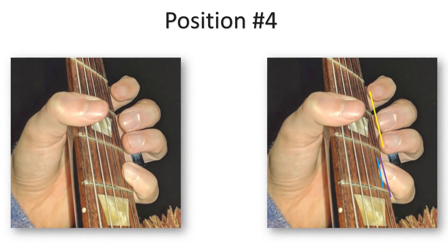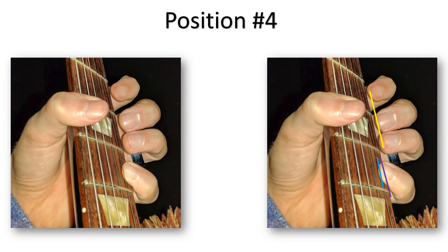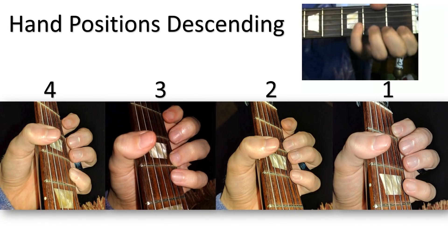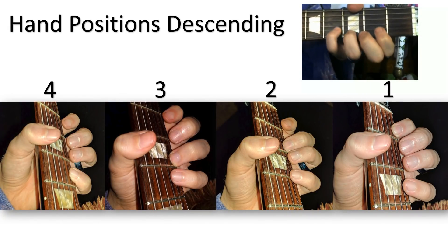Here is position 4, again trying to keep a generally straight line between the unused fingers. This is what descending 4 frets would look like. And ascending.